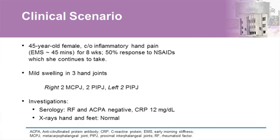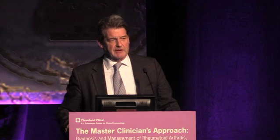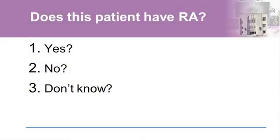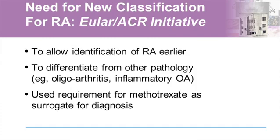This is a fairly typical patient: 45 years old, hand pain for eight weeks, 50% response to NSAIDs which she continued to take, mild swelling in three hand joints. She was one of the few we see these days with synovitis that we can't easily classify, and she had normal x-rays. If you ask students whether this patient has rheumatoid, the implications of that answer are considerable.